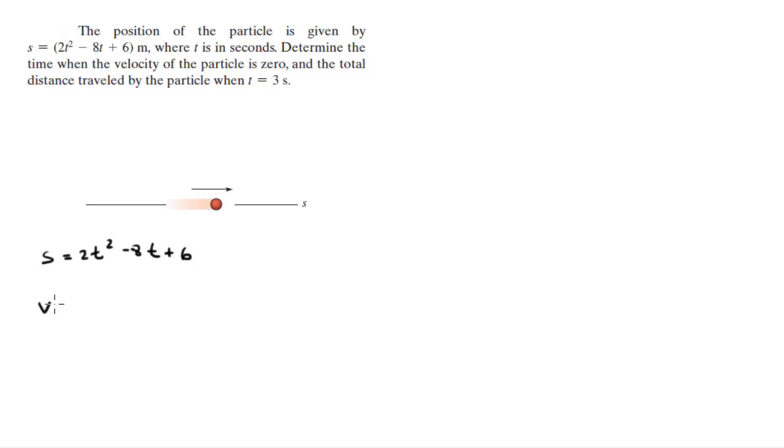You know that the velocity is given by the derivative of the position with respect to time, so the velocity is equal to 4t - 8. Now they're asking you find the time when the velocity is 0, so v = 0, 4t - 8, and you just gotta solve for t and you get that t = 2 seconds.